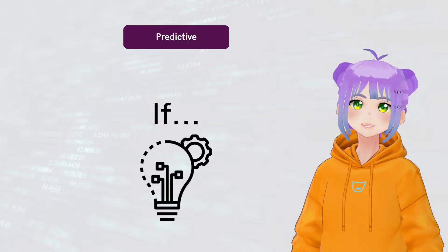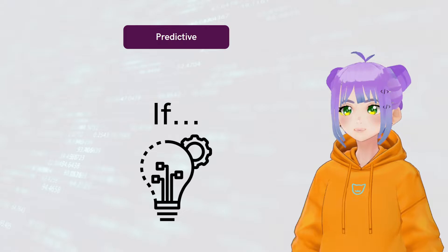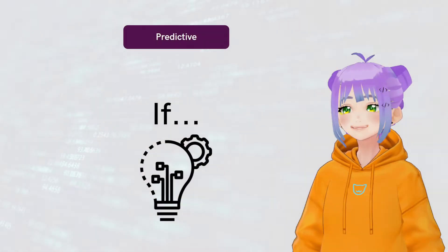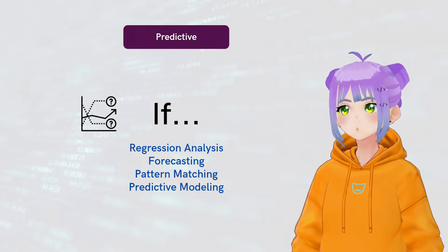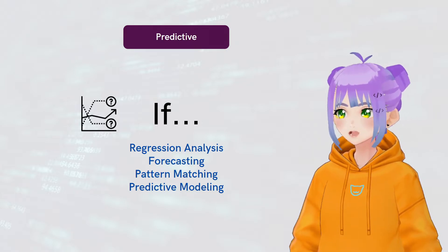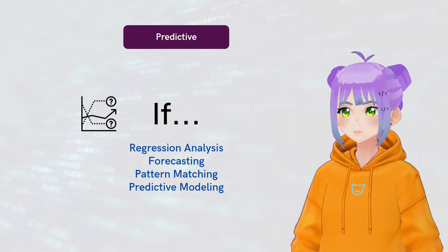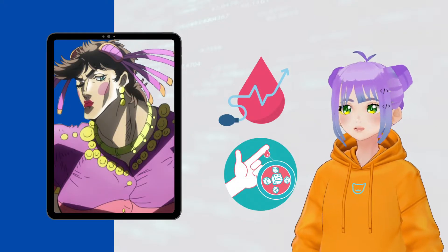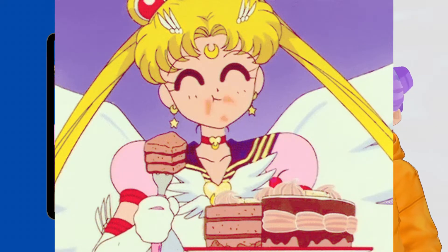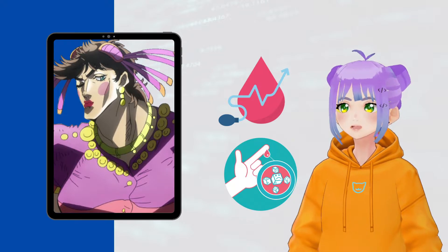Another type is predictive analytics. Here, you use data to forecast the probability of the occurrence of future scenarios. We would use techniques such as regression analysis, forecasting, pattern matching, and predictive modeling. Going back to our previous example, we can forecast that if our patient continues with her unhealthy lifestyle, in the long run, she will develop diabetes and high blood pressure.